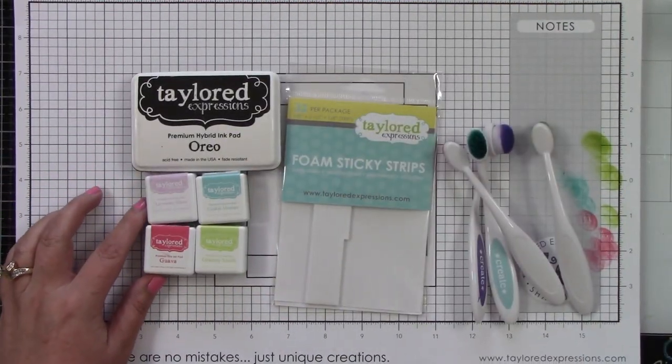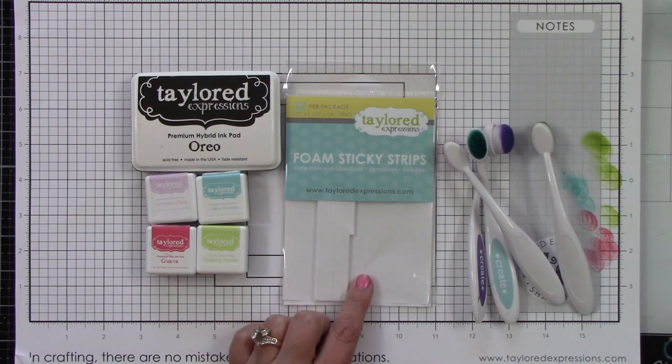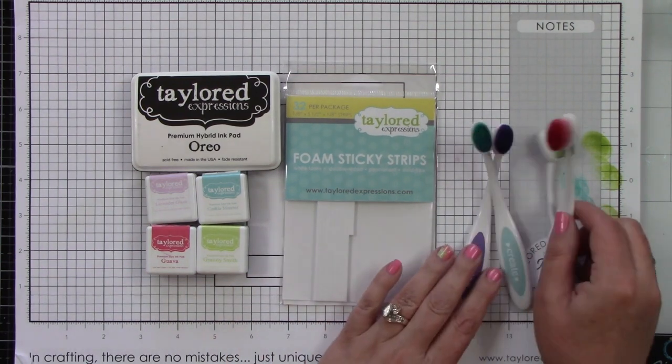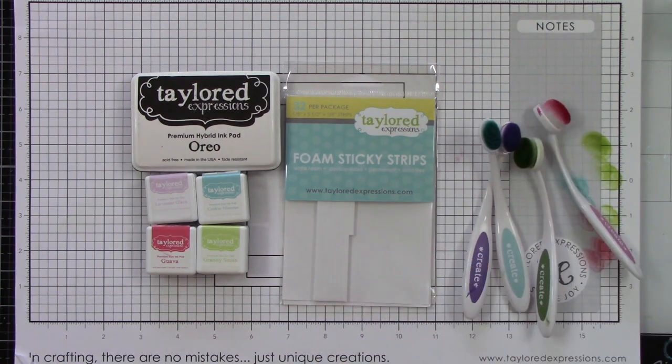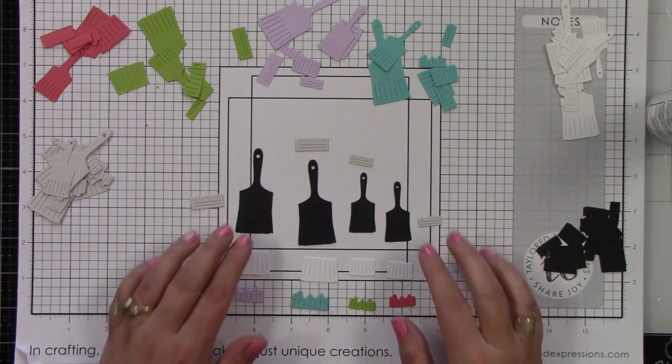Of course you have your gray zipper bag. I'm also using Oreo ink, Lavender Glaze, Cookie Monster, Guava, and Granny Smith. I'm also using some matching cardstocks with those, some Sea Salt cardstock, Sugar Cube cardstock, foam sticky strips, and Bitty Blender brushes.